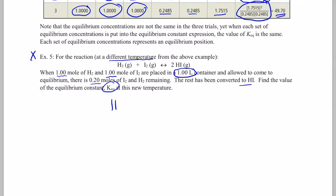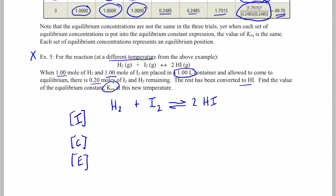Let me show you how I like to do these problems. I write the reaction and create something called an ICE box diagram. ICE diagrams have the letters I, C, and E. I put brackets around each one — brackets are shorthand for molar concentrations. I stands for initial molar concentration. I have 1 mole of H2 and 1 mole of I2 in a 1-liter container, so their initial molar concentrations are 1.00 M. I don't have any HI initially.